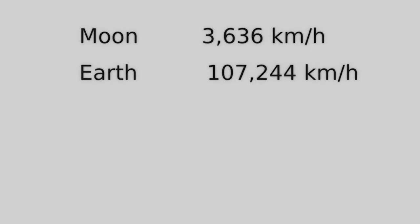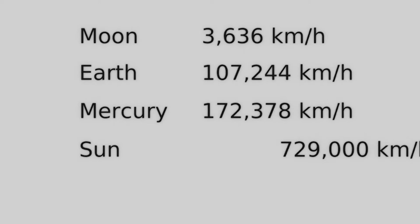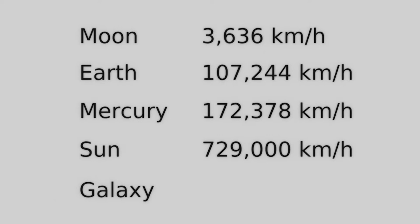Here are some more numbers. The Moon is orbiting around the Earth at about 3,636 km per hour. The Earth and the Moon are orbiting around the Sun at a speed of 107,244 km per hour. Mercury, the closest planet to the Sun, is orbiting at a rate of 172,378 km per hour. The Sun itself, along with the rest of the solar system, is orbiting the center of the Milky Way galaxy at a rate of 729,000 km per hour. But how fast is the galaxy moving? You have to have something to compare it to, because everything is relative. Well, compared to cosmic background radiation, which is radiation left from the Big Bang, the galaxy is moving at a rate of 2,100,000 km per hour.